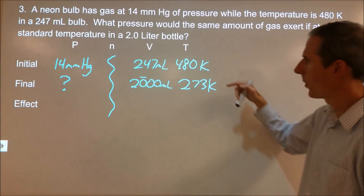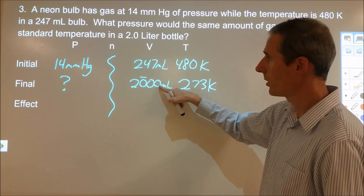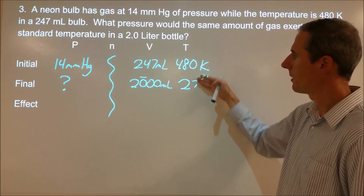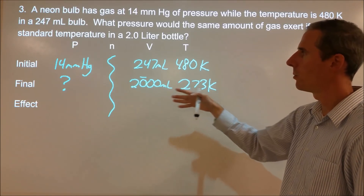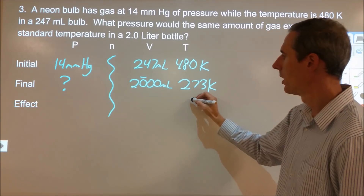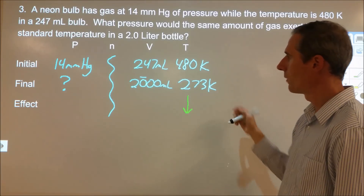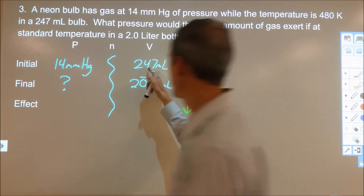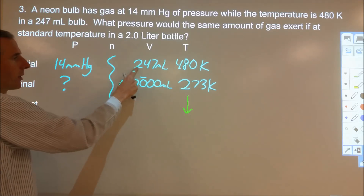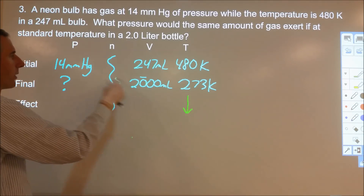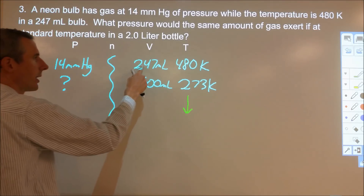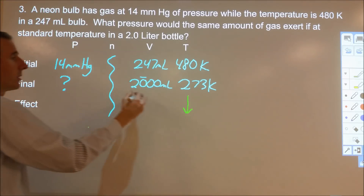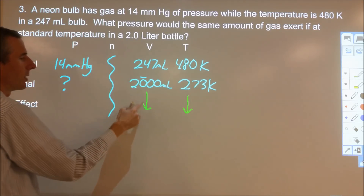We want to know the final pressure; the amount of gas is the same so we can ignore it. The temperature is decreasing and the volume is increasing. Evaluating the temperature change first: if temperature drops and pressure and temperature are directly proportional, then the pressure should decrease. Evaluating the volume separately: the volume is getting bigger, and since pressure and volume are inversely proportional, if the volume increases, the pressure must decrease. So the effect of the volume increase also causes the pressure to decrease.